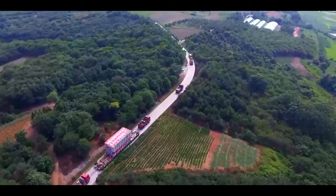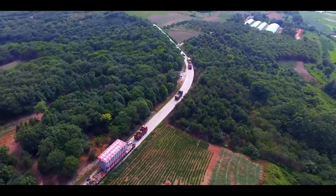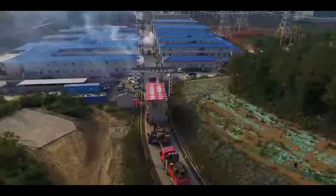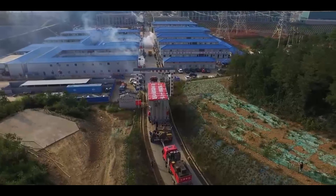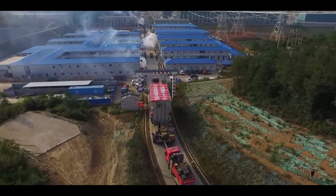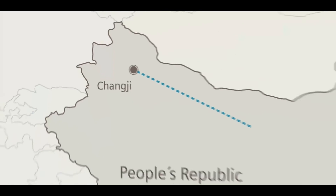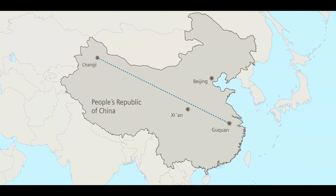It took 51 days for it to arrive in Shanghai, and then continued a long distance of more than 3,000 kilometers to reach the power station — the final location of the giant machine with a capacity of 1,100 KV.